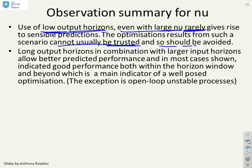So basically, what I'm saying is I wouldn't ever use a low-output horizon because I wouldn't be able to trust it. If you have a long output horizon and you combine this with a larger input horizon, you get better predicted performance and generally speaking, if you've got good performance both within the horizon window and beyond, this is an indicator of a well-posed optimization.